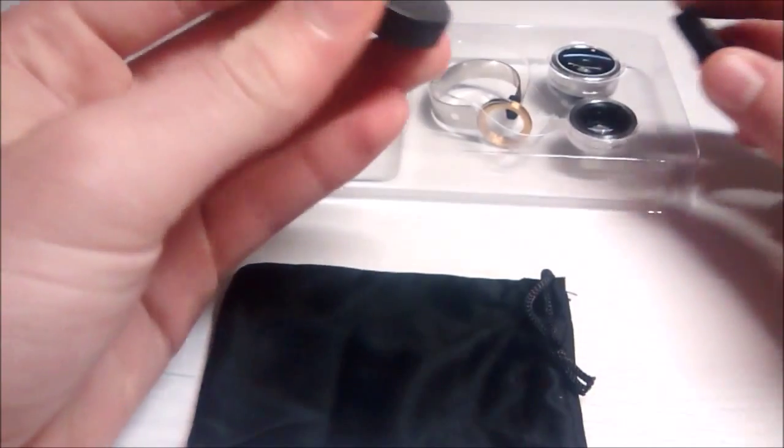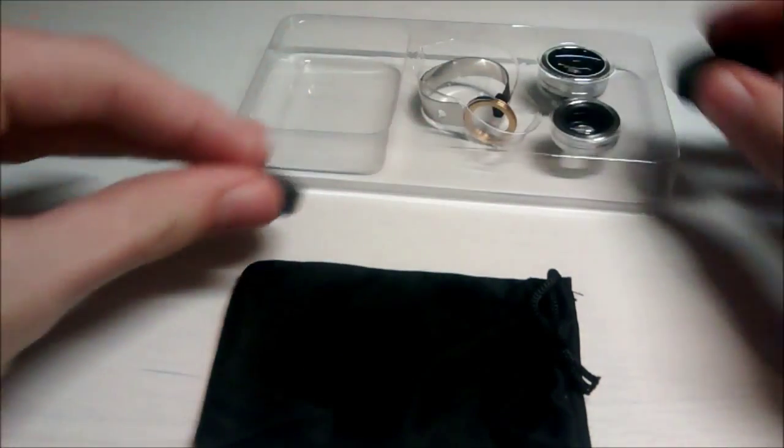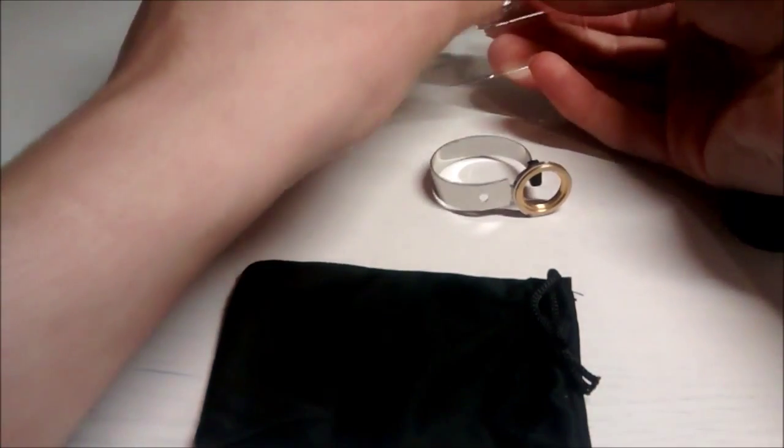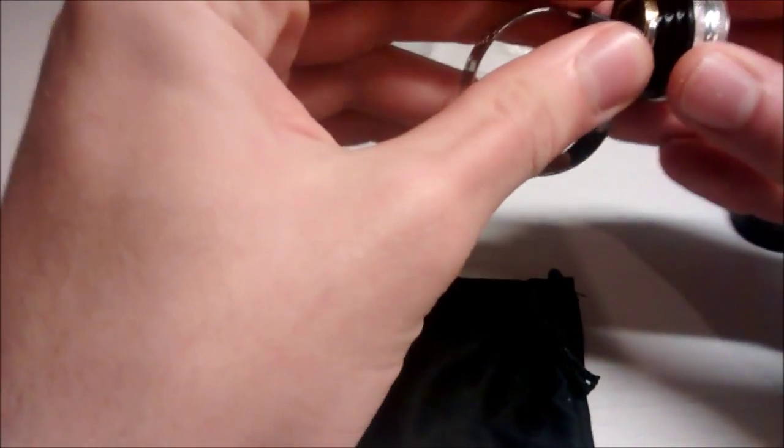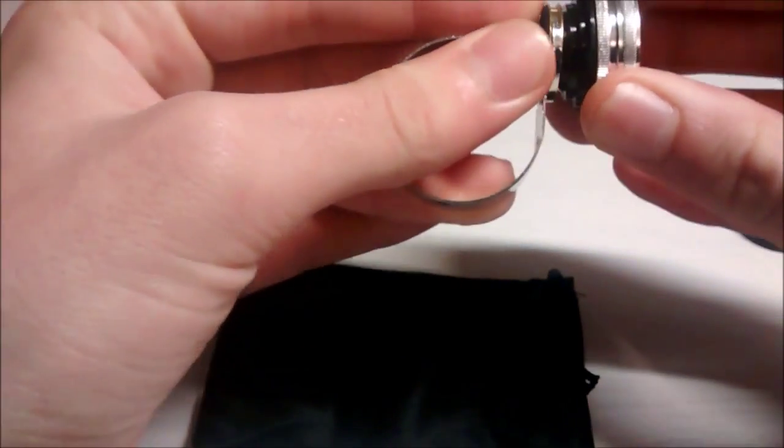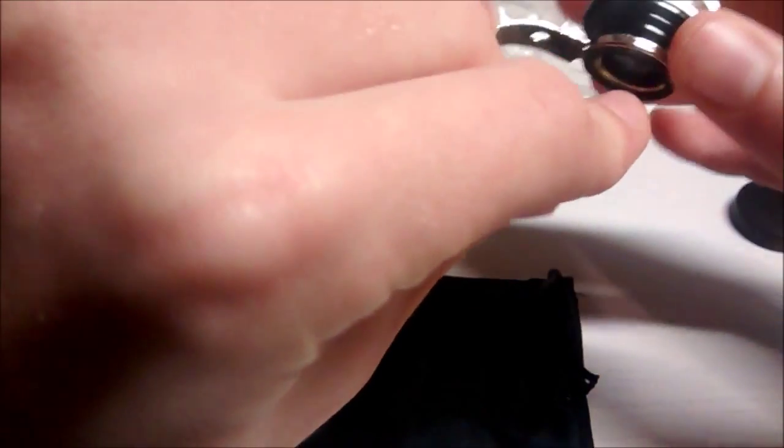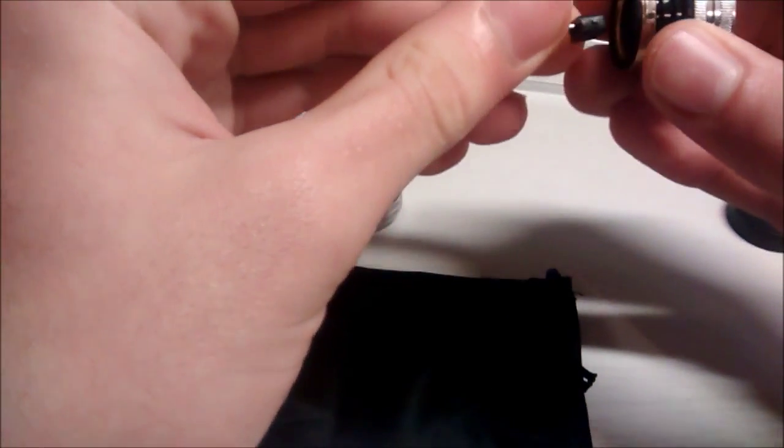It does also come with two lens covers. So one goes on there and one goes on there. If we get the clip out and the two lenses, they are really good quality and they easily just clip into here. And then they'll stay in there and you just clip it onto your phone.